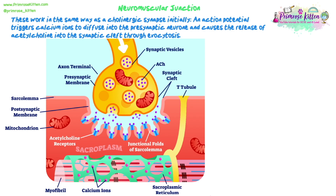Looking at a closer picture of an axon terminal — the actual neuromuscular junction — this looks similar to what we've seen when we looked at the synapse diagram previously, and we're comparing this to a cholinergic synapse, which uses acetylcholine. Initially, the first stages are exactly the same: an action potential arrives at the presynaptic neuron, causes the change in membrane potential, triggers an influx of calcium ions, which causes the release of acetylcholine from vesicles by exocytosis into the synaptic cleft.